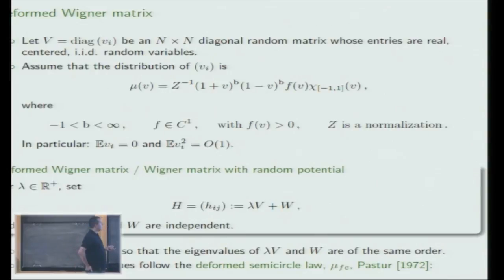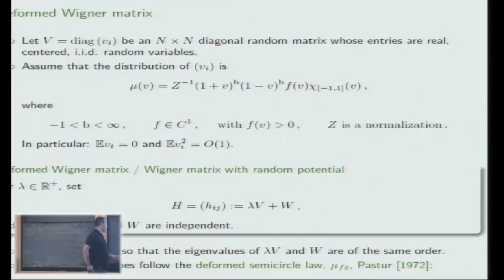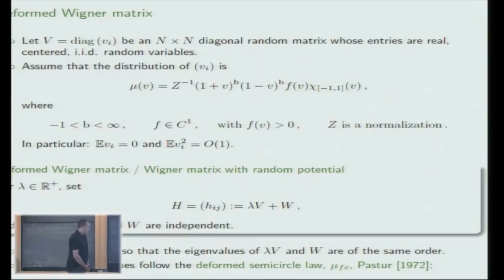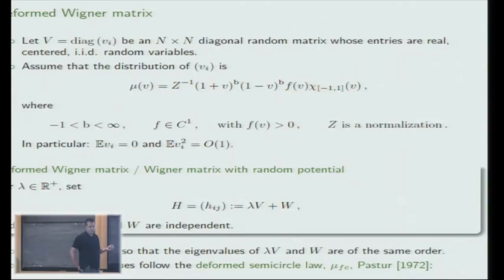Note that the variance of these entries V_i is therefore 1. Unlike for the Wigner matrix, the variances of the W_{ij} are 1 over N. Now, for deformed Wigner matrices, or Wigner matrices with random potential, I sum such a V together with a Wigner matrix W. I introduce a coupling constant lambda, which I assume is positive, and I assume that V and W are independent. We want to study the properties of such matrices, which is non-trivial when lambda is of order 1—neither going to 0 nor to infinity as N goes to infinity.